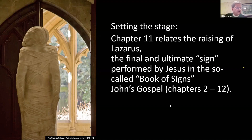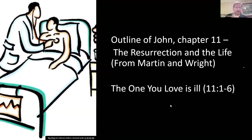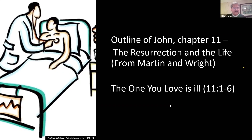For the outline I gave you and the outline I'm going to use tonight to break this large chapter into manageable pieces, I have used the chapter outline from Martin and Wright. This covers all of chapter 11 in manageable pieces. We're going to start with part A: 'The one you love is ill,' which covers verses one through six. I suspect we're all resonating with that right now, feeling this one in our bodies. It's stunning to me that we have this story of the raising of Lazarus while we're all in the midst of a pandemic.